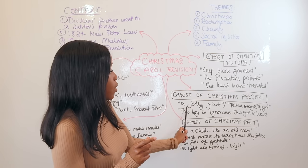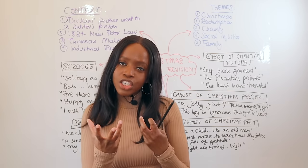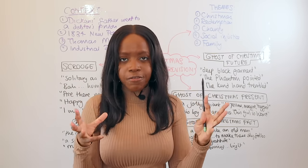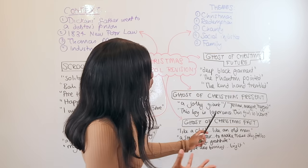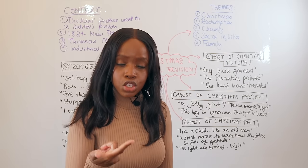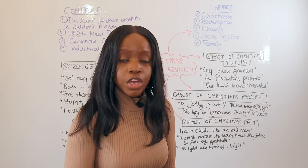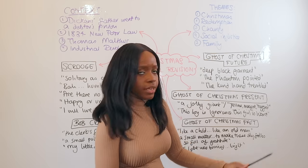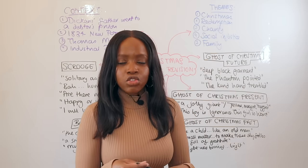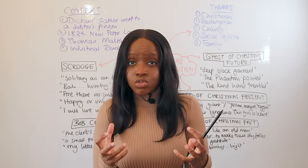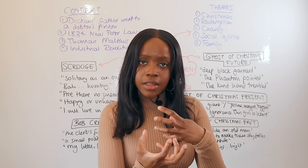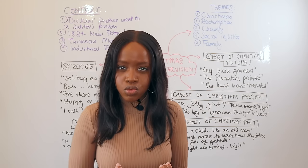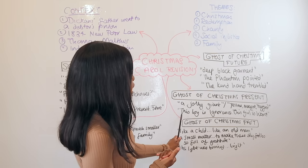The Ghost of Christmas Present is described as a 'jolly giant' — the adjective 'jolly' contrasts our expectations, as ghosts are usually seen as scary and malevolent, yet this ghost is almost like Santa Claus. The second key quotation is when the ghost presents the two children to Scrooge — symbolizing the impact of poverty on the young, robbing them of their innocence — described through the list: 'yellow, meager, ragged, scowling, warfish.' This listing emphasizes how people like Scrooge caused the children of their employees to suffer.